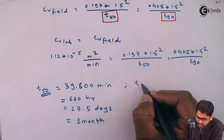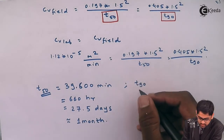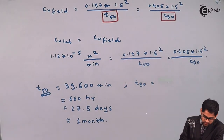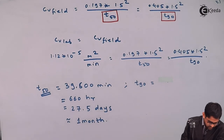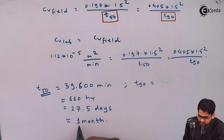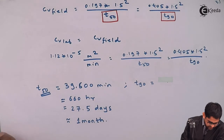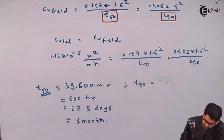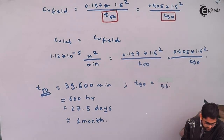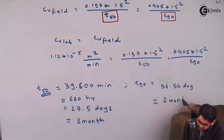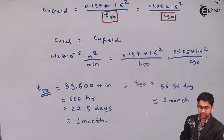For T-70 in the field, calculating that value gives T-70 equal to 56.54 days. So it will take nearly 2 months for the clay layer to consolidate up to 70% of its ultimate settlement value in the field.